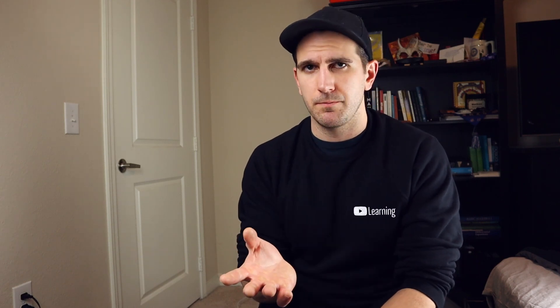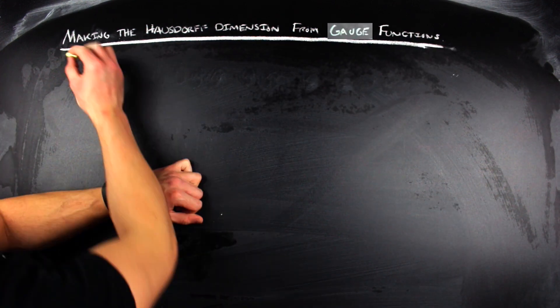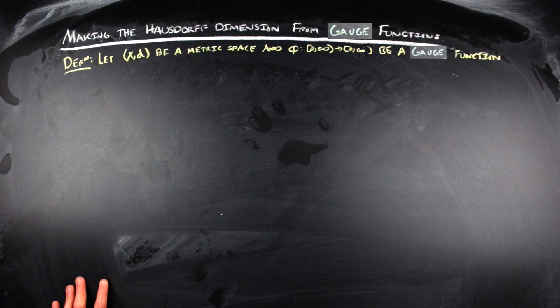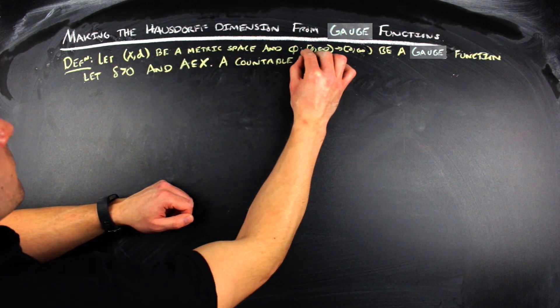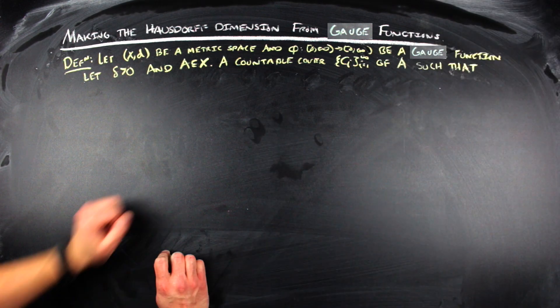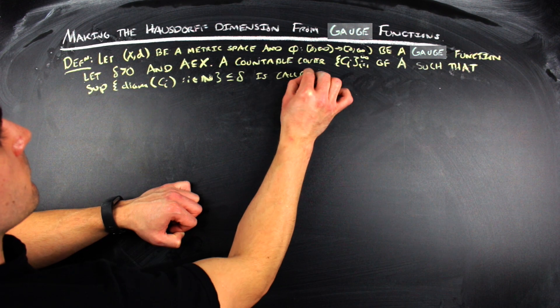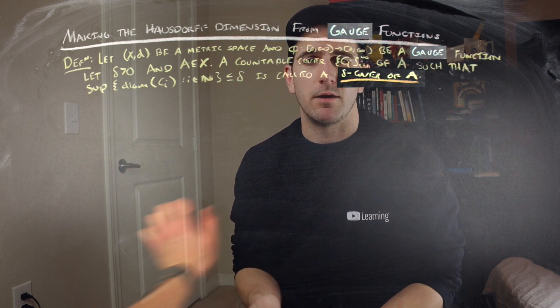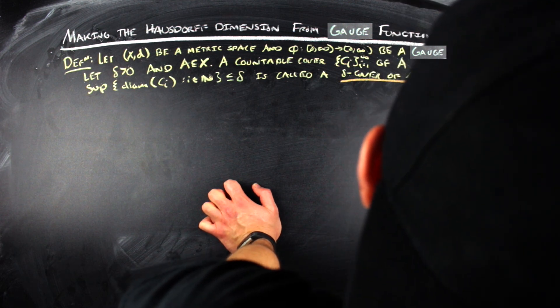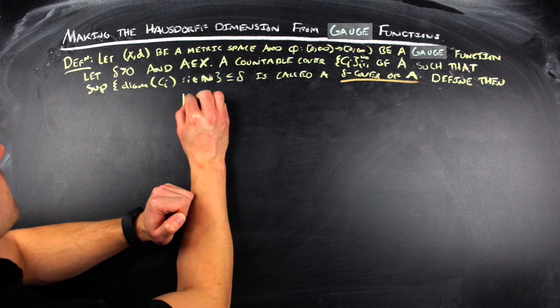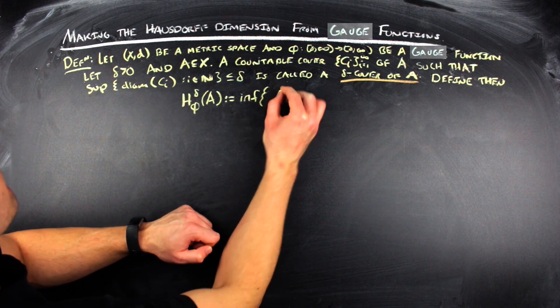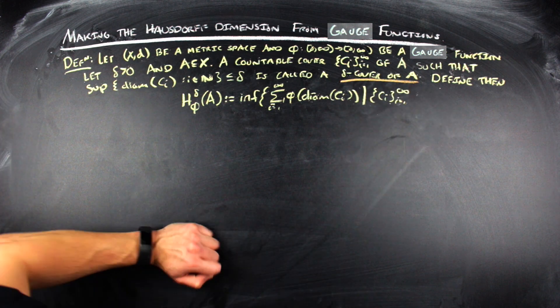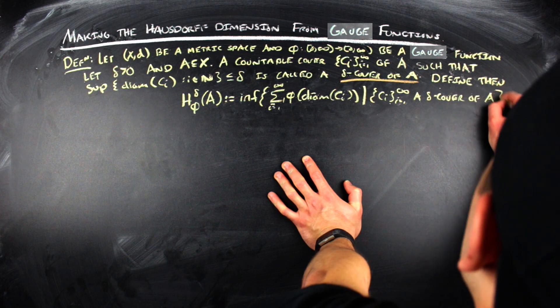That is, φ(t) = t^α for α > 0. We use these gauge functions to build what we call the Hausdorff dimension, and the Hausdorff dimension is going to end up being this correct dimension thing that does the right stuff with objects like Sierpinski's triangle for the cases of this video. To define it, we have to do a little bit of work. First, let (X,d) be a metric space, and φ from [0,∞) to [0,∞) be a gauge function. Let δ > 0, and A be a subset of your metric space.